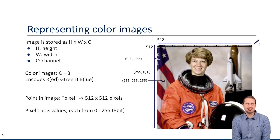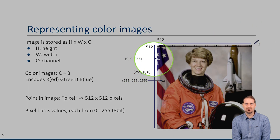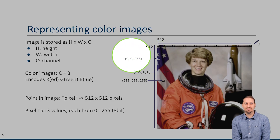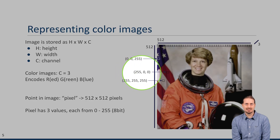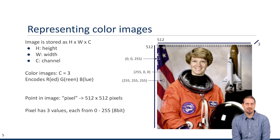Looking at some examples: a pixel corresponding to a mostly blue point would have values 0, 0, 255 — no red, no green, all intensity in the blue component. A red pixel would have 255 for red and 0 for the other values. For a white pixel, all three color channels have maximum intensity.